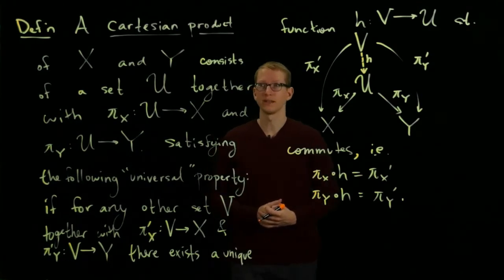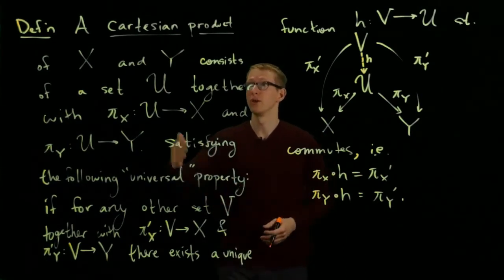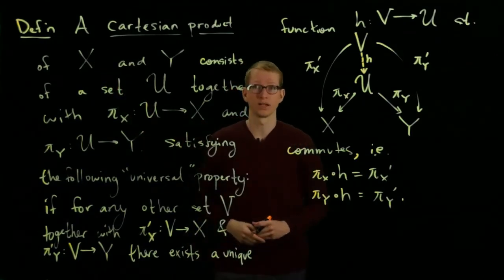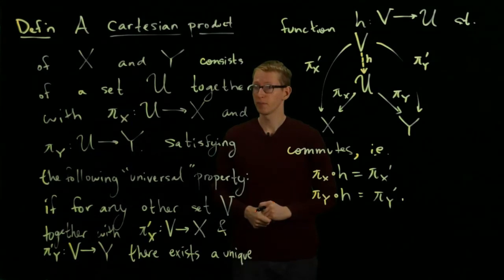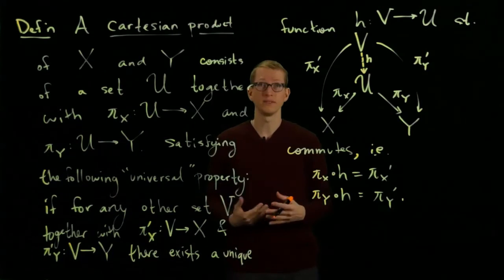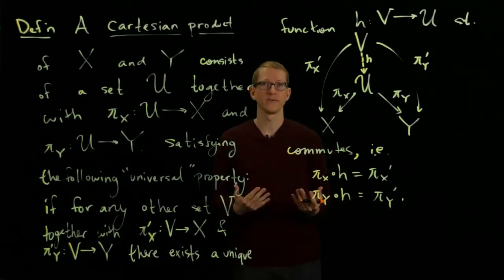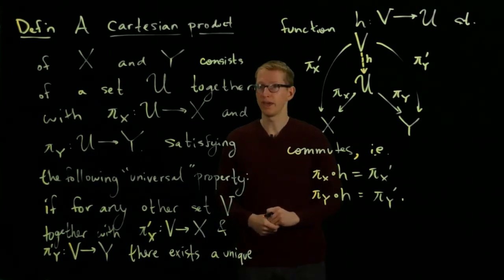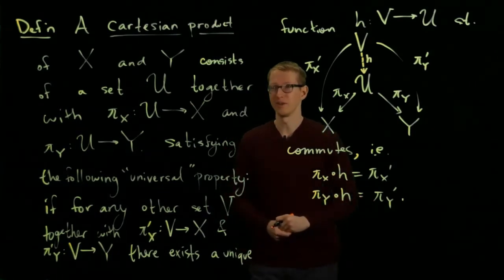Two questions should immediately arise when you look at this definition. First, the zeroth question: what do I mean by 'a' Cartesian product? Shouldn't I say 'the' Cartesian product? Related to that, one immediate question is: how do I know that such a product even exists? Whenever you make a mathematical definition, you usually have in mind a couple of examples. Hopefully your set of examples is non-empty and it's not so large that it encompasses everything else.